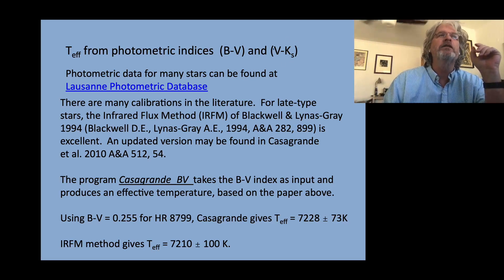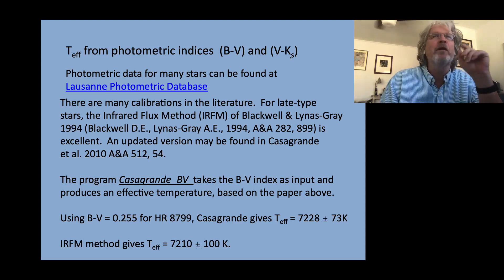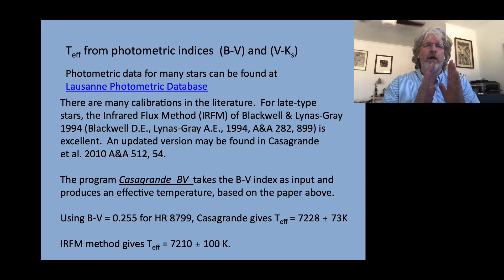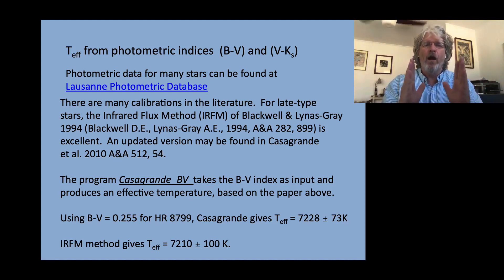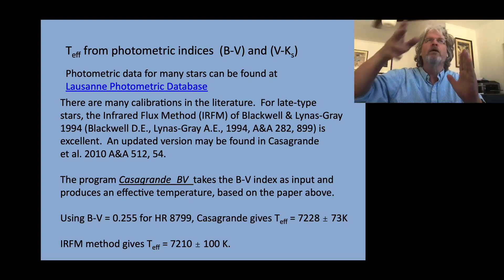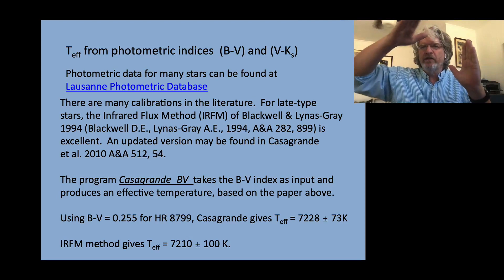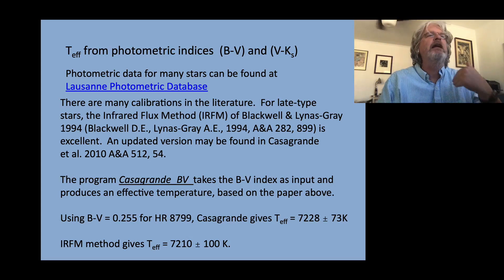You might ask why V minus K would be better than B minus V. One idea is the bigger the separation between your filters, the more of the flux curve you're sampling — more of what you'd expect from a black body curve. Another way to look at it: that K filter is out there at very long infrared wavelengths, and what you're really getting a sense of is the slope of the Rayleigh part of the black body flux distribution. The only tricky bit — and it's a significant tricky bit — is that the K filter is in the infrared, and our atmosphere is unpleasant to work with in the infrared because of water vapor absorption.